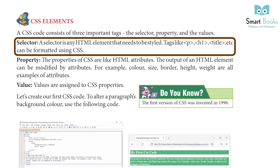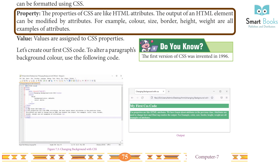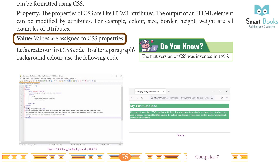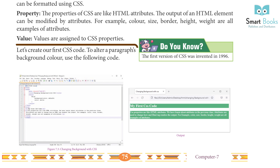The properties of CSS are like HTML attributes. The output of an HTML element can be modified by attributes. For example, color, size, border, height, and weight are all examples of attributes. Values are assigned to CSS properties. Did you know the first version of CSS was invented in 1996?